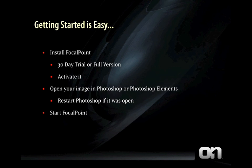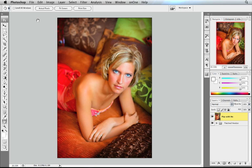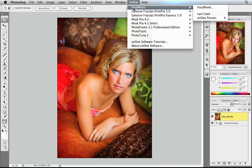Getting started with Focal Point is easy. First you'll need to install it. You can do this from either the 30-day trial available on the OnOne website, or from the full version if you've purchased Focal Point. If you're installing the full version, you'll need to activate it as well. Then go ahead and open your image in Photoshop or Photoshop Elements. Once your image is open, launch Focal Point. The easiest way is to go to the OnOne menu and select Focal Point from the fly-out.